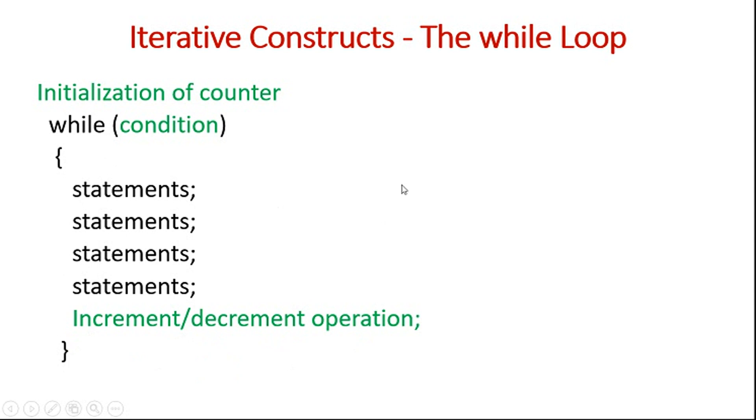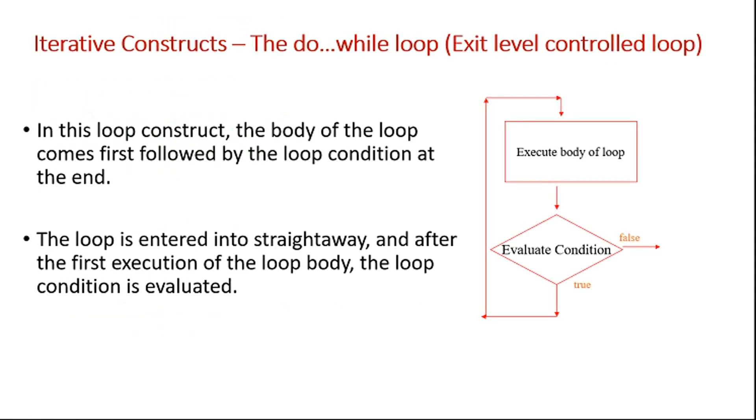Now this is what about the while loop and its syntax. Let's look at the next type of loop, that is do while loop. As it is mentioned do while, so here it is exactly opposite to that of the while loop. So the condition will be checked at the last, and body of the loop will be executed in the execution.